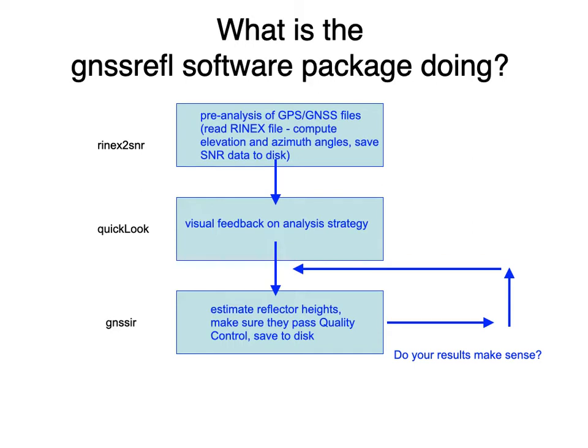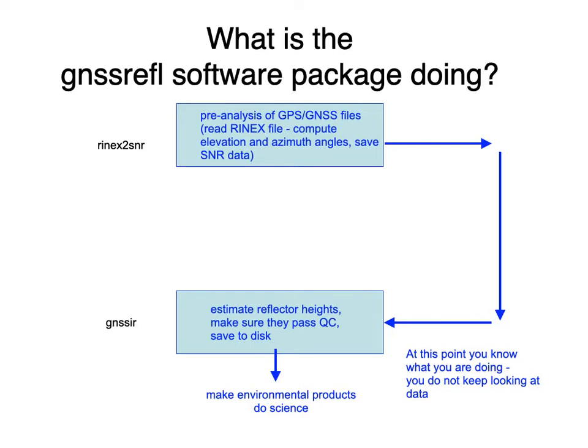So what's the software package doing? There are three main modules. rinex2snr reads the RINEX files, computes the elevation and azimuth angles, and saves the SNR data. QuickLook is a visual feedback module that lets you work on an analysis strategy. And GNSS_IR is the workhorse that does the analysis for reflector heights after you've already saved the data and your analysis strategy. At the beginning, you should expect to iterate on these things — you might change your region or your elevation angle mask. Eventually, you won't look at data visually; you'll translate the data, estimate reflector heights, and put your effort into making environmental products or doing science with the results.